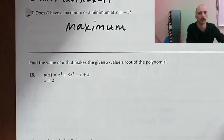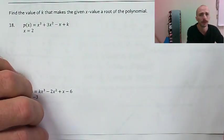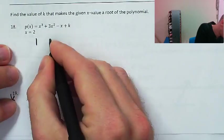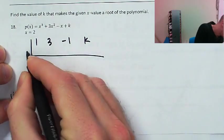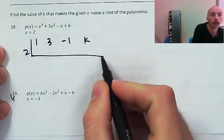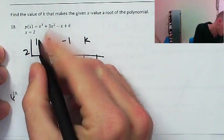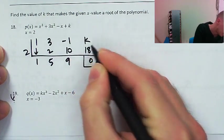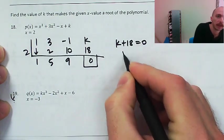Now we're going to find the value of k that makes the given x value a root of the polynomial. I'm going to set it for synthetic substitution: 1x cubed, 3x squared, negative 1x, plus k. Running x equals 2 through synthetic substitution: bring down 1, then 2, 5, 10, 9, 18. So k plus 18 needs to equal 0, which means k is negative 18.